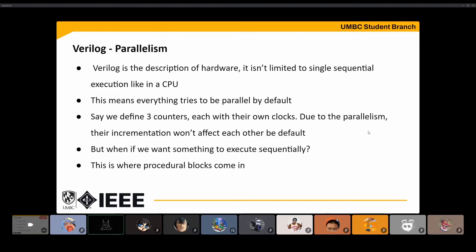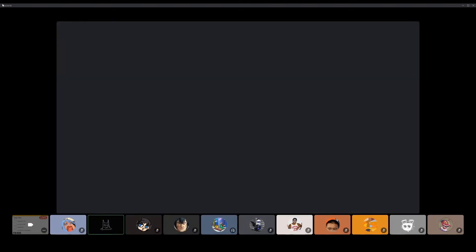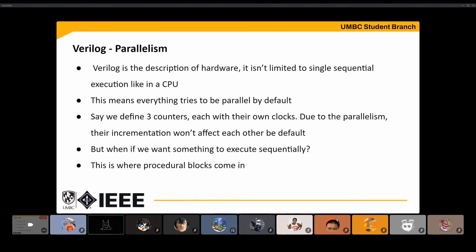Parallelism: as mentioned, this is hardware at the end of the day, and hardware isn't limited by a CPU running one instruction at a time. If you give two inputs to a circuit, there's going to be power running through both of them. Because of that, Verilog by default treats everything as parallel unless you specifically define some things to not work in parallel. For example, if we have three counters, those three counters won't be skewed by each other unless you design them to be — they'll keep time separately and can all increment at the same time.